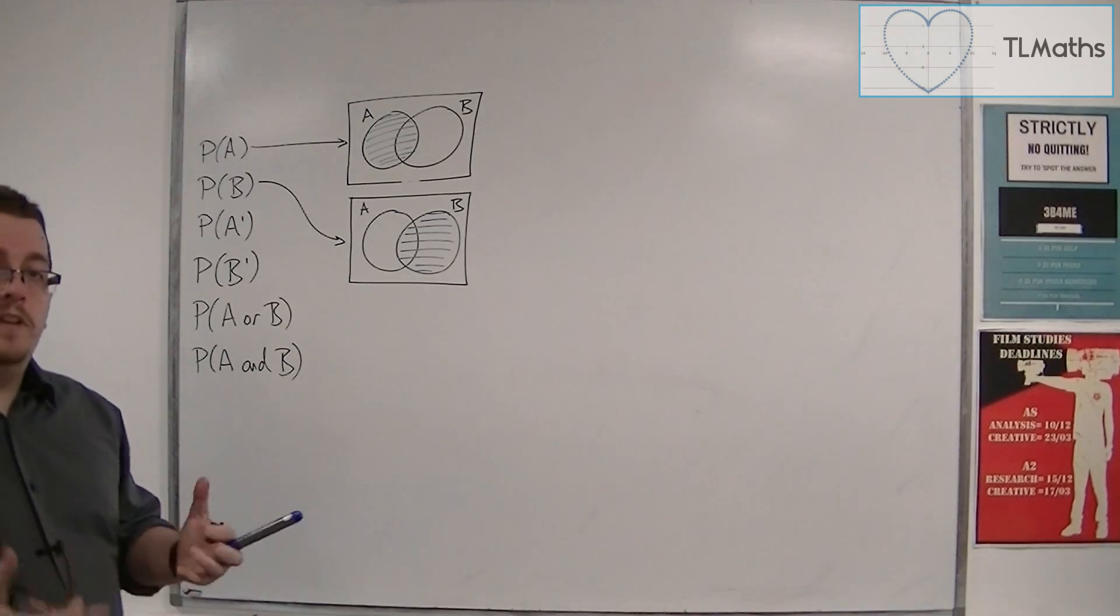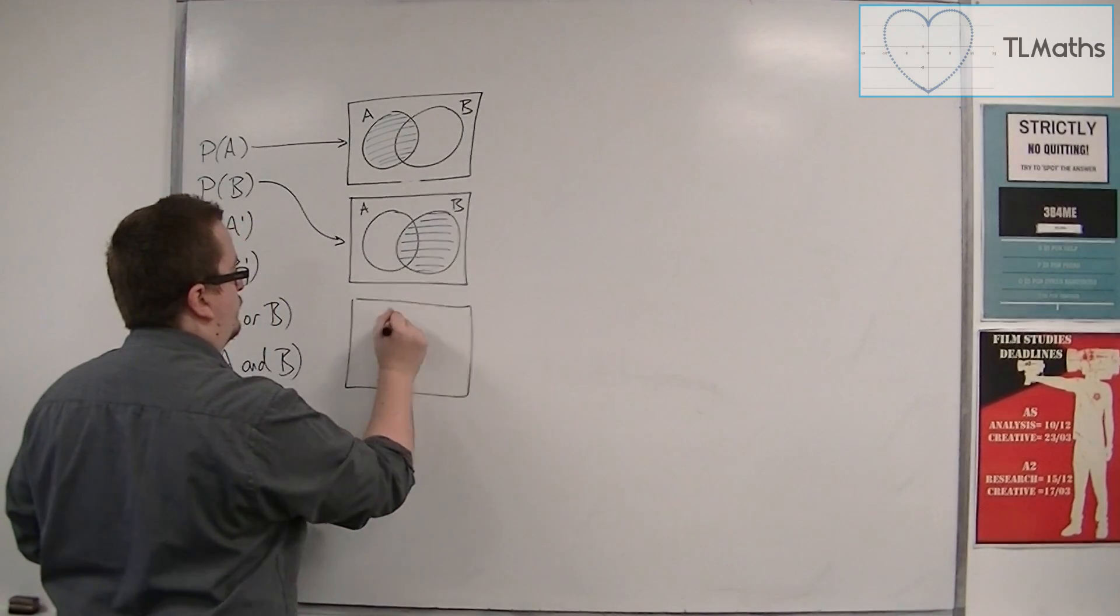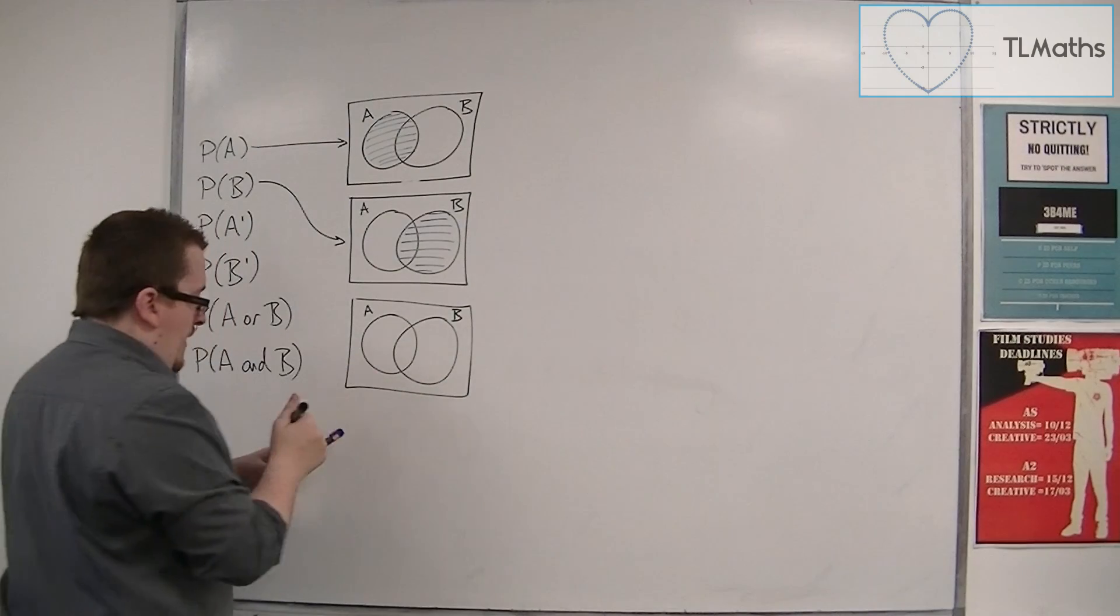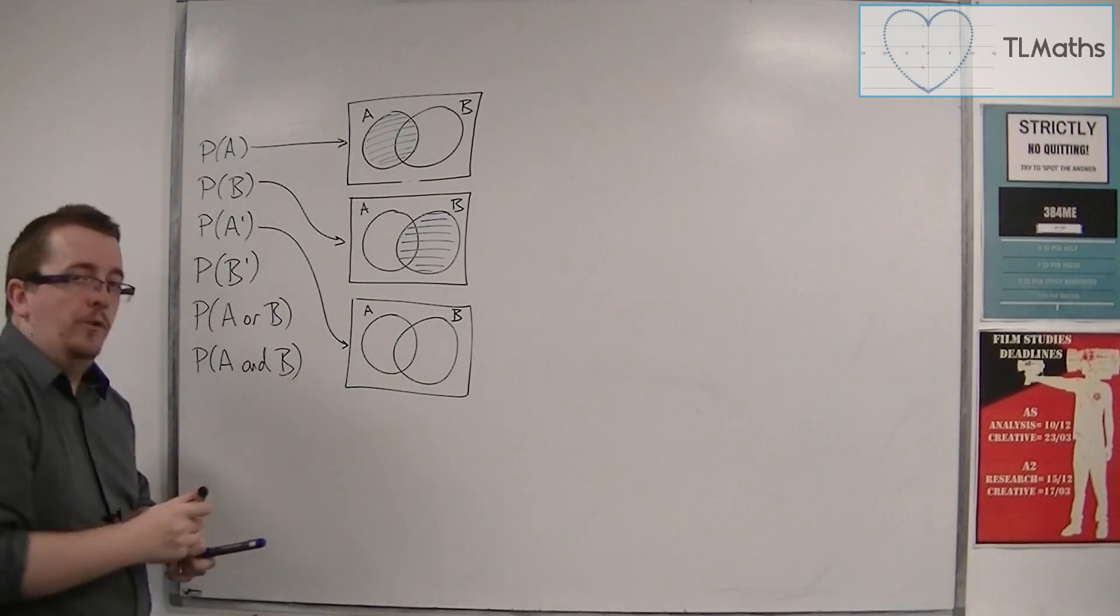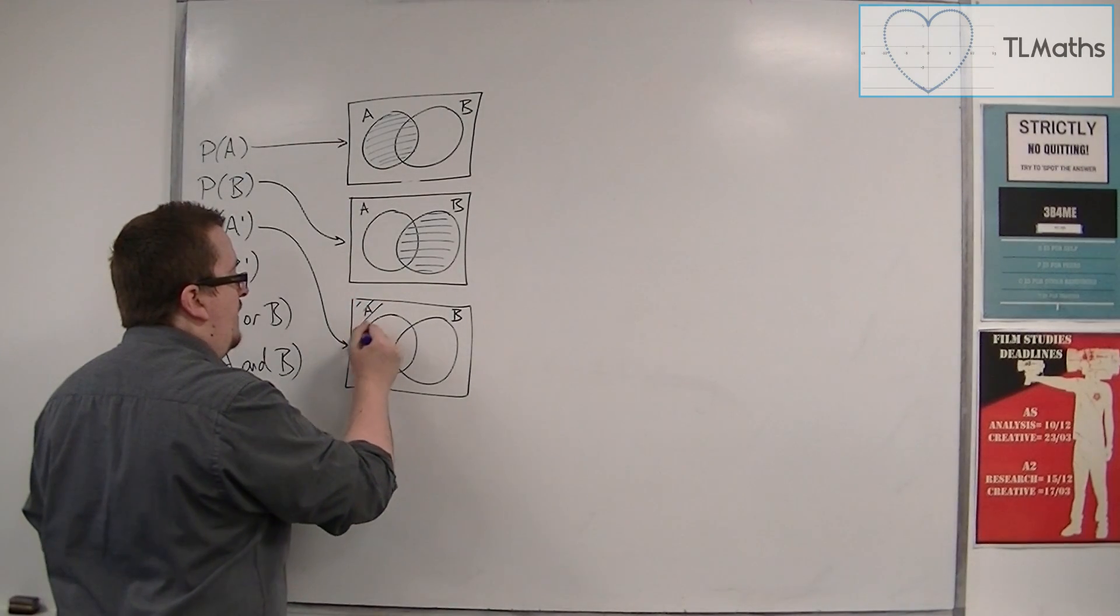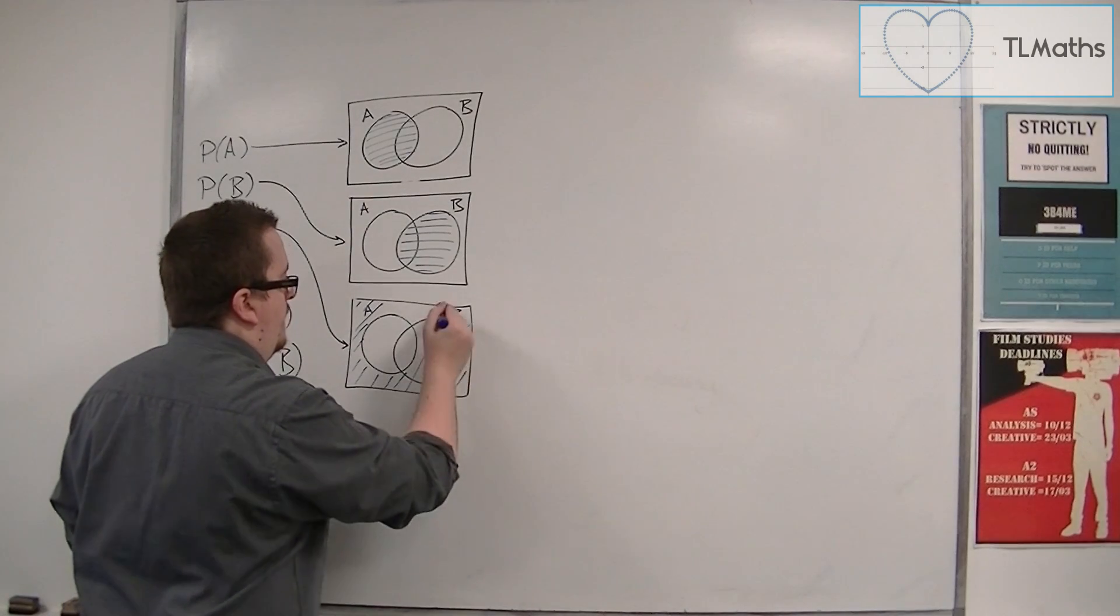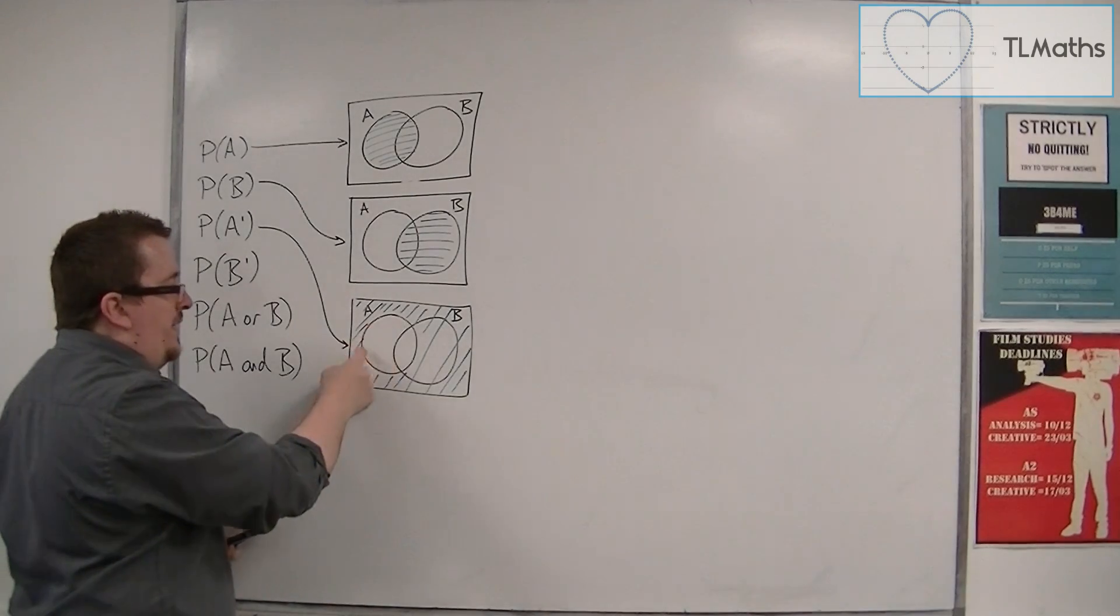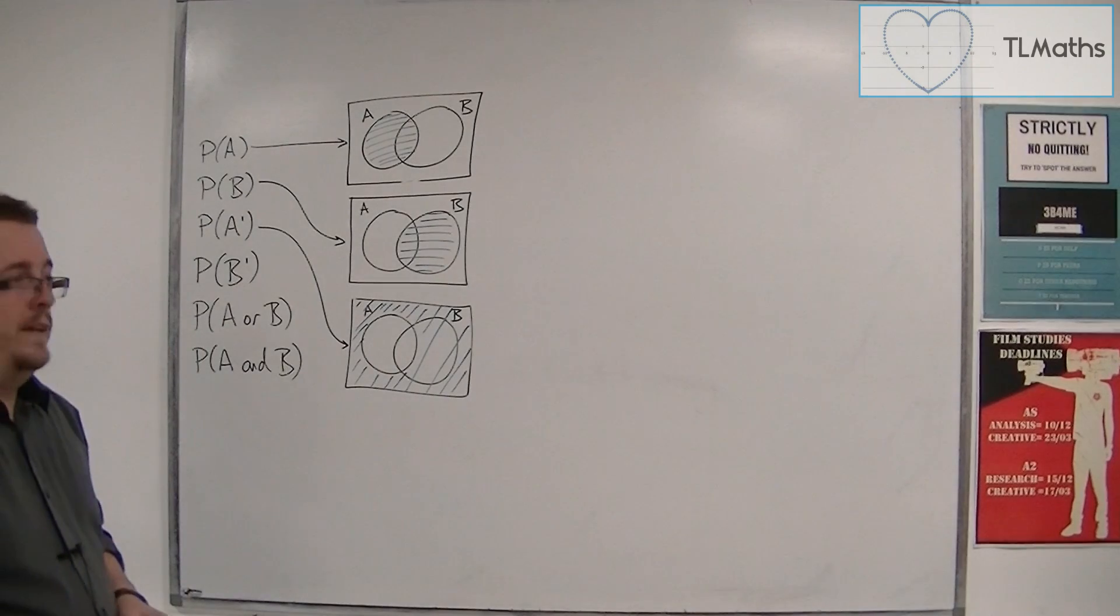Now, if we're going to do the probability of not A, then what we're saying there is anything that is not A. And so it is anything that is outside of the circle A, including outside of the intersection that we have there.